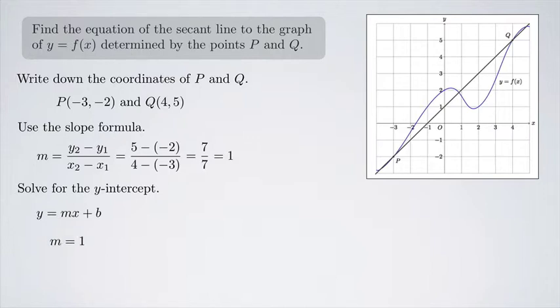I know that the slope is 1. I just calculated that. And I can pick either P or Q to plug in for x and y. I'm going to pick Q, so that's (4, 5).